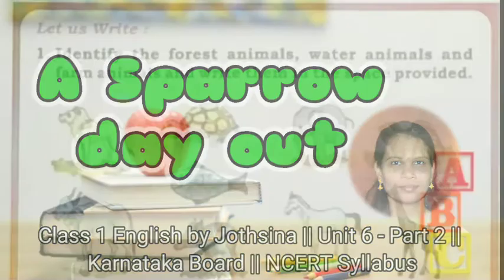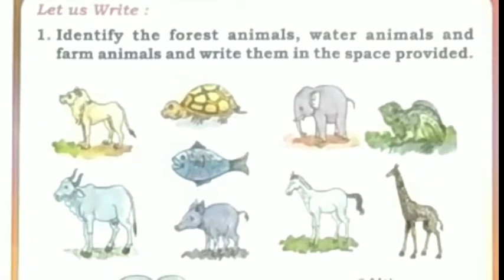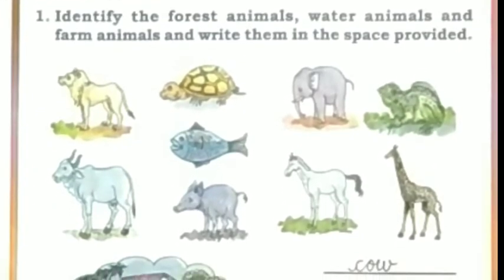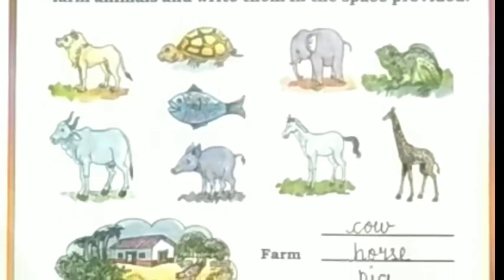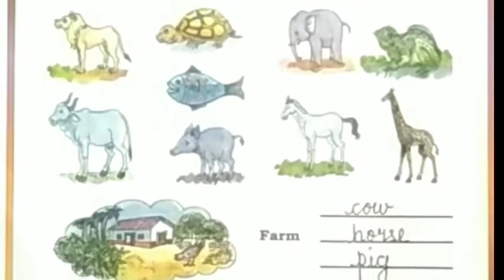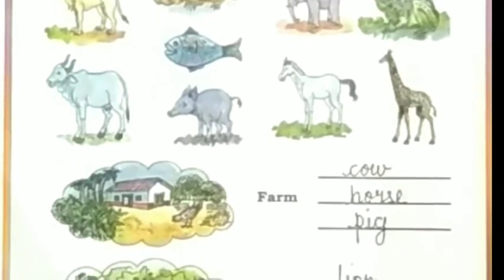Children, let us identify the forest animals, water animals and farm animals and write them in the space provided. Here we have few animal pictures. Let us identify farm animals: cow, horse and pig.